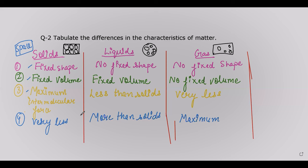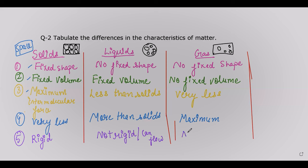For rigidity: solids are very rigid — they remain in the same shape. Liquids are not rigid; they can flow. Gases are also not rigid and can flow. These are the differences in the characteristics of matter between solids, liquids, and gases. This can definitely be asked as a 3, 4, or 5 mark question in the exam.